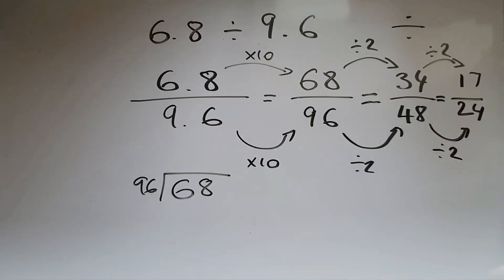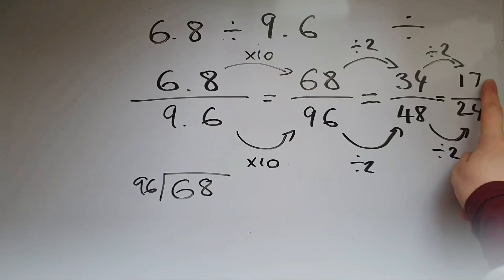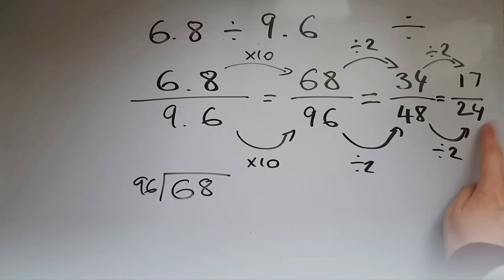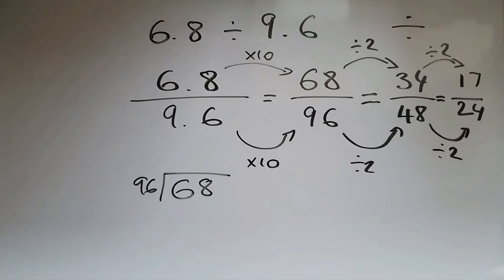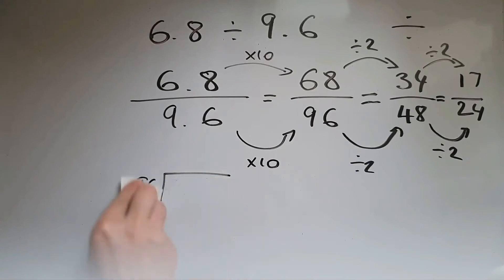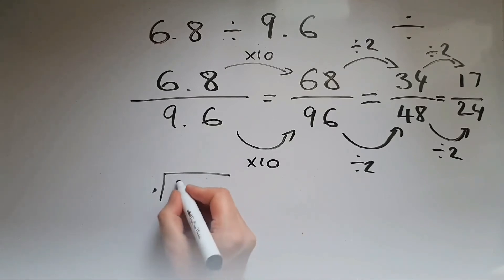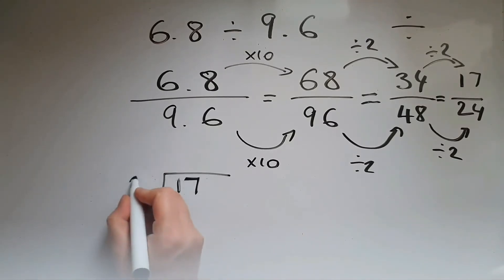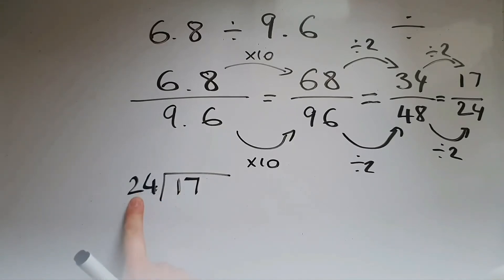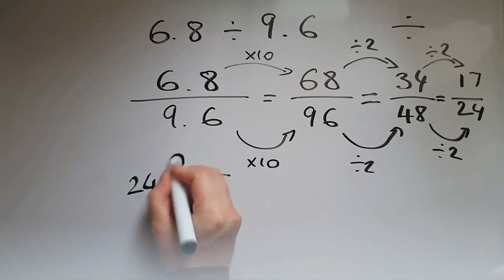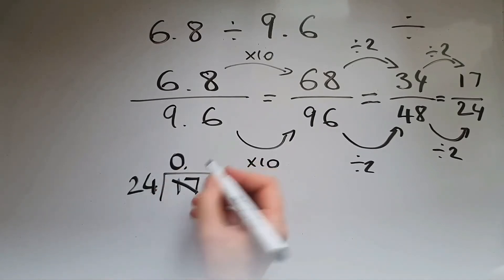Can I go any further? No, because 17 is a prime number — it can only be divided by 1 or 17 — and 17 doesn't fit into 24 without a remainder. So now it's time to do the division: 17 divided by 24. How many 24s fit into 17? That would be 0, with 17 remaining.